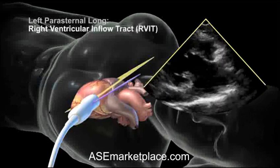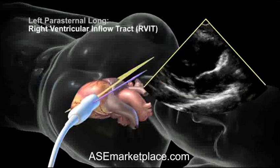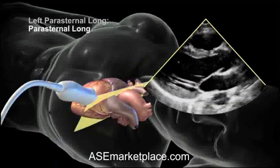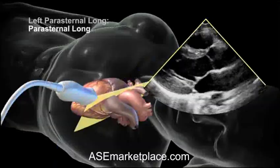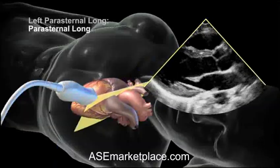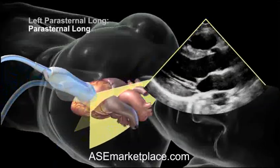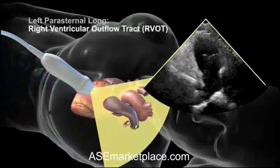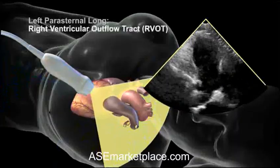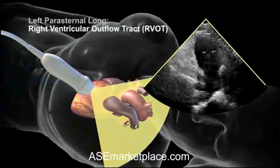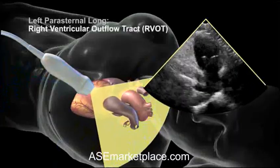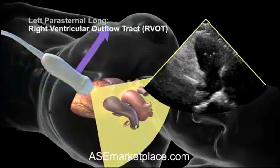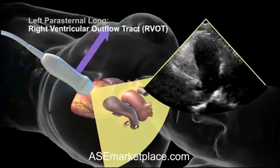Notice that the indicator is still pointing towards the patient's right shoulder. Starting again from the parasternal long view, the transducer is angled towards the patient's right hip to acquire the right ventricular outflow tract, or RVOT view. Notice that the indicator is still pointing towards the patient's right shoulder.